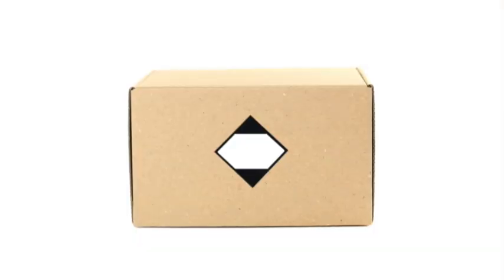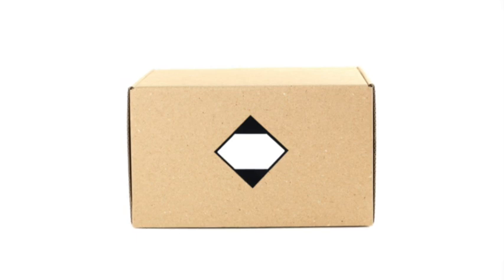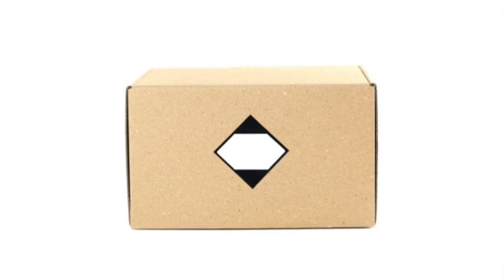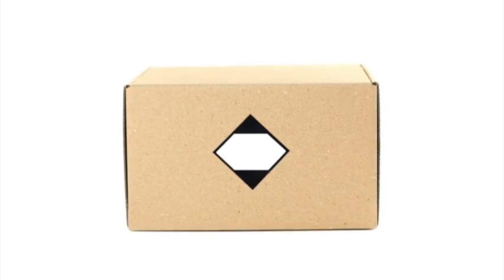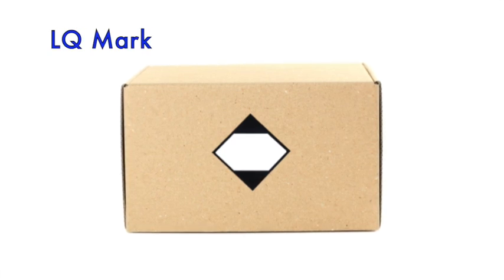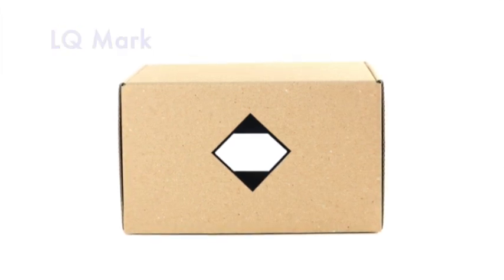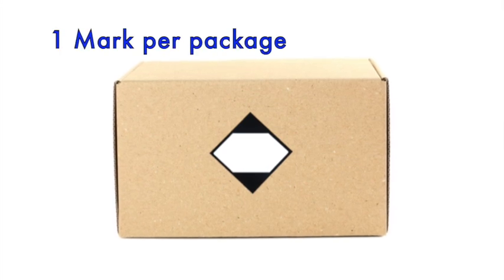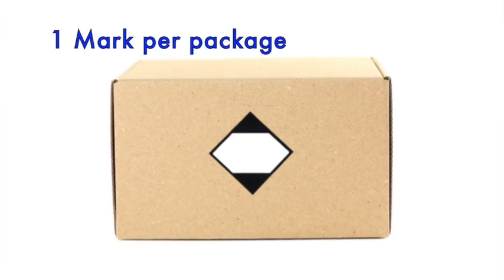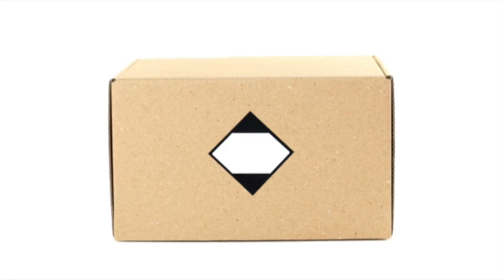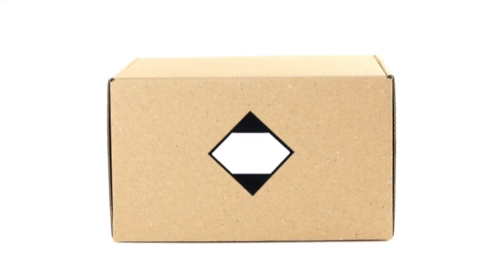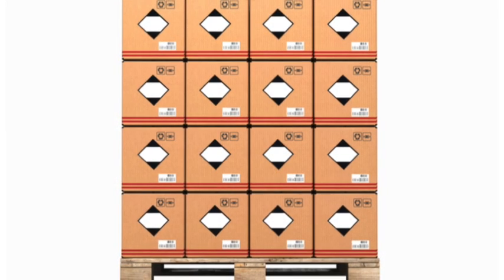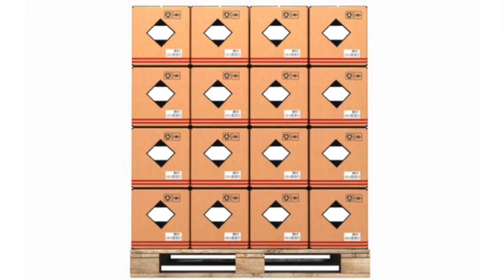To assist in identifying which chemicals are being shipped as limited quantities, all such packages have to be marked with the limited quantity mark. The one shown here is suitable for use by road and sea sections of the journey. Only one of these marks should be visible on the package. It must be clearly displayed with no other handling or transit labels placed on or over it. Every single package that is shipped as limited quantities must have this mark applied, even if there is a pallet load of them.